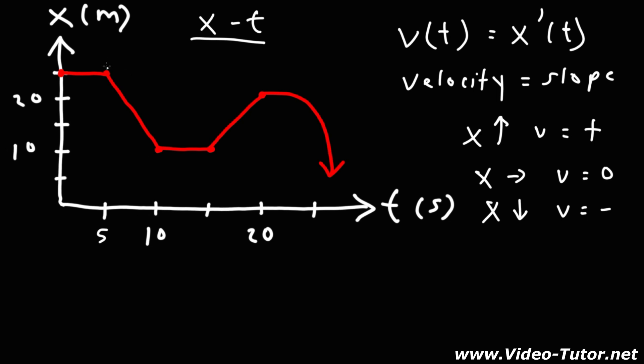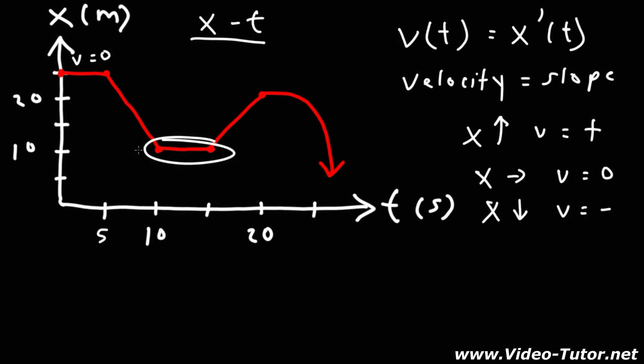During the first five seconds, the velocity is going to be zero because we have a horizontal tangent line — the position is not changing. So if an object's position is not changing, the object is not moving and its velocity is zero. During this other flat part, the velocity is also zero. Anytime you have a horizontal tangent, the velocity will be zero.